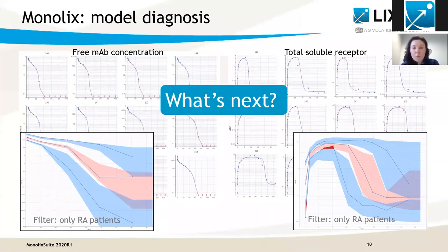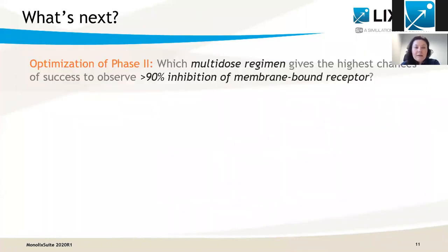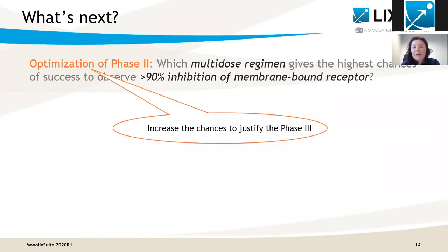So what's next? Now is the time to use this information as a guide for the design of the phase two study, which will analyze the effectiveness of a multi-dose regimen on the inhibition of the receptor. It is intended to be an exploratory phase, but its results will determine if a drug is sufficiently promising to justify a phase three clinical trial. And one of the possible sources of failure of this phase two is the dosing regimen.